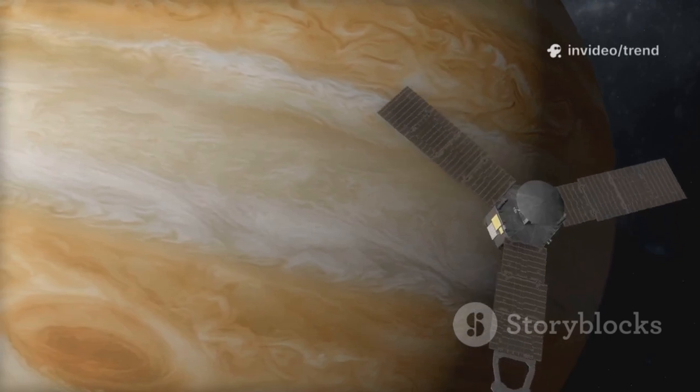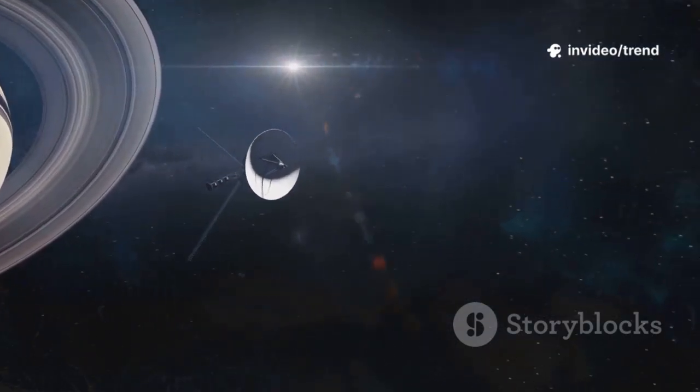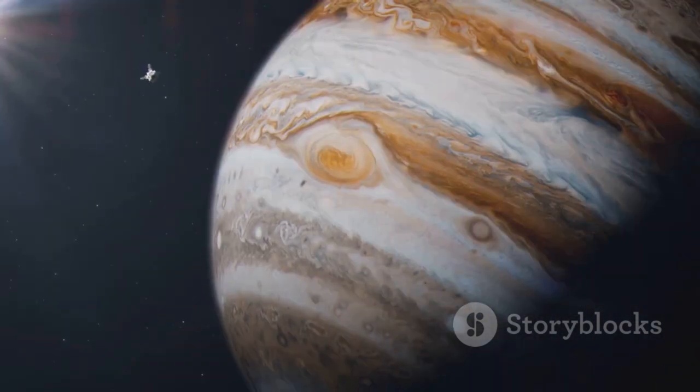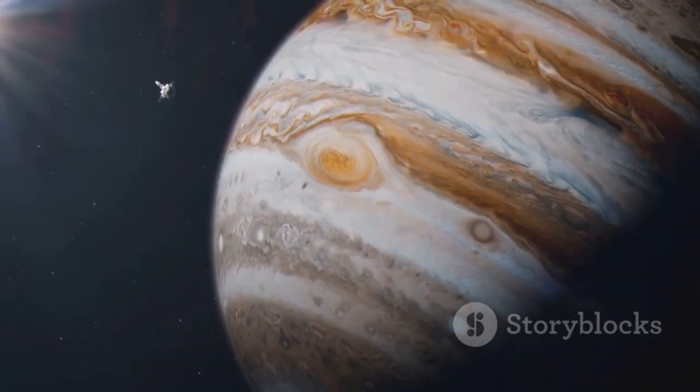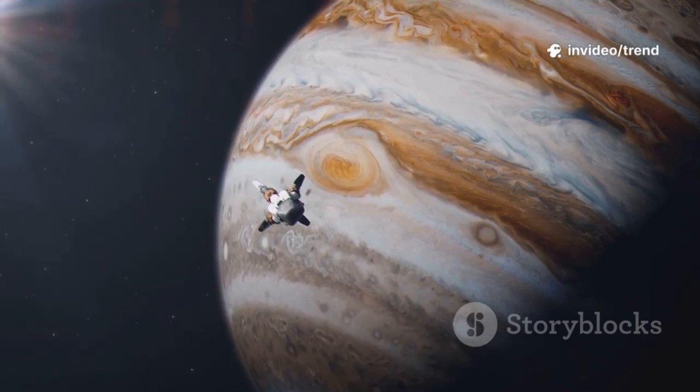Voyager 1 became our robotic emissary, its cameras and sensors extending our senses into the unknown. It revealed Jupiter's raging storms, volcanic moons, and Saturn's dazzling rings - breathtaking discoveries that rewrote textbooks.